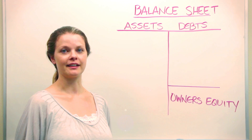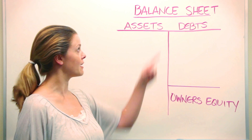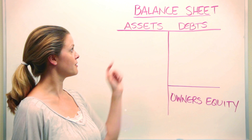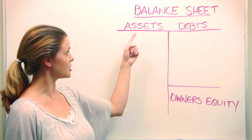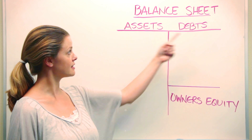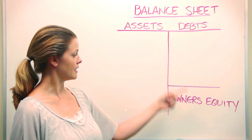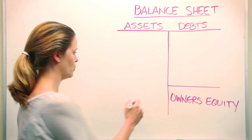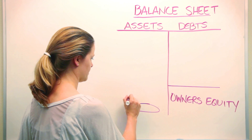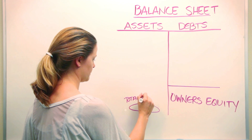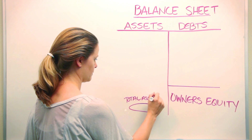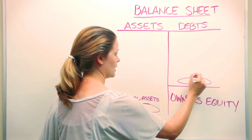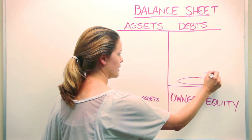The numbers we need to calculate the debt ratio are found on the balance sheet. The balance sheet is divided into three sections: assets, debts, and owner's equity. We find total assets here and total debts here.